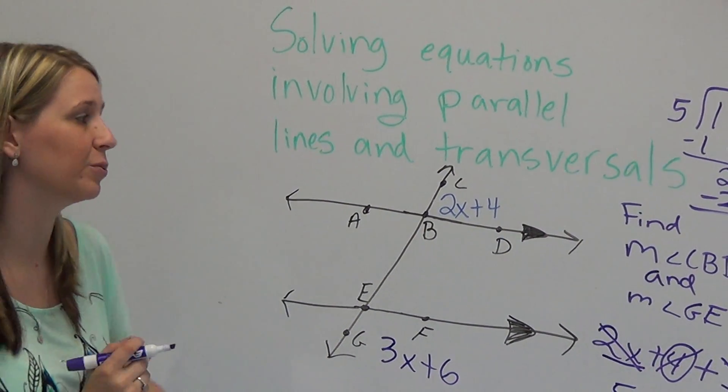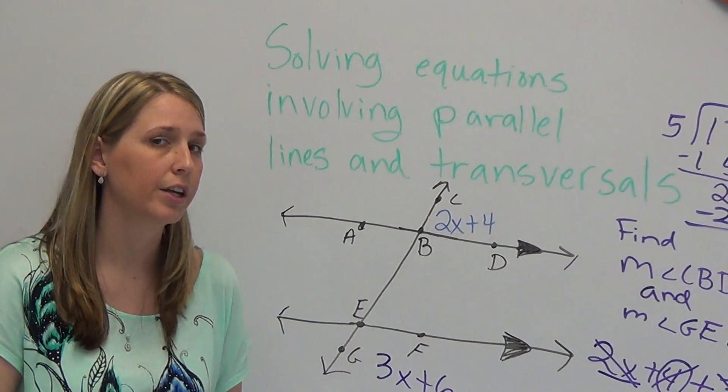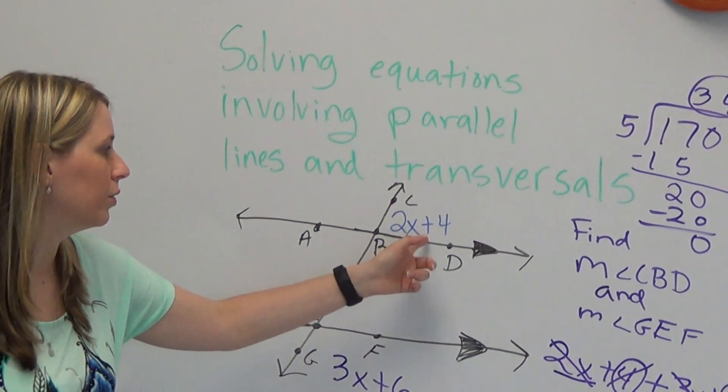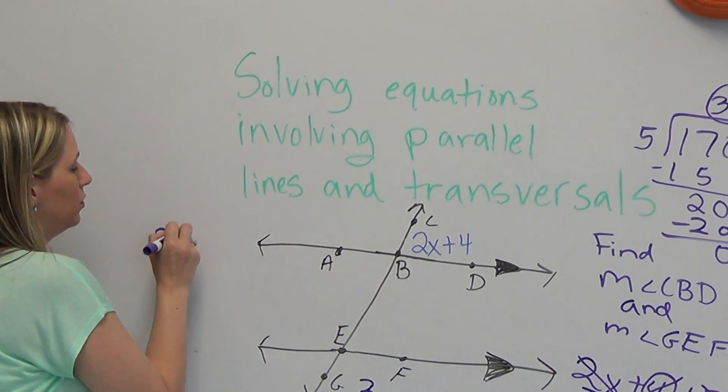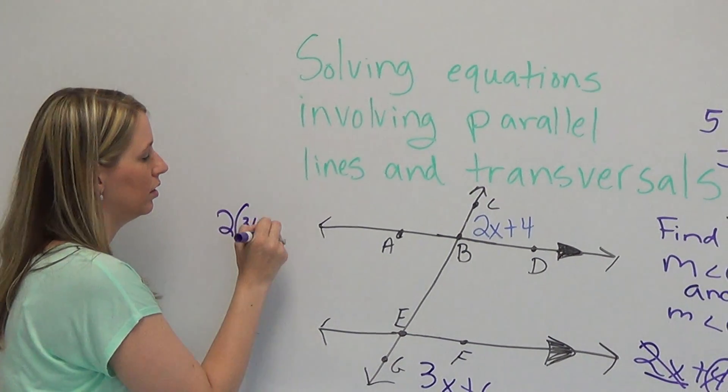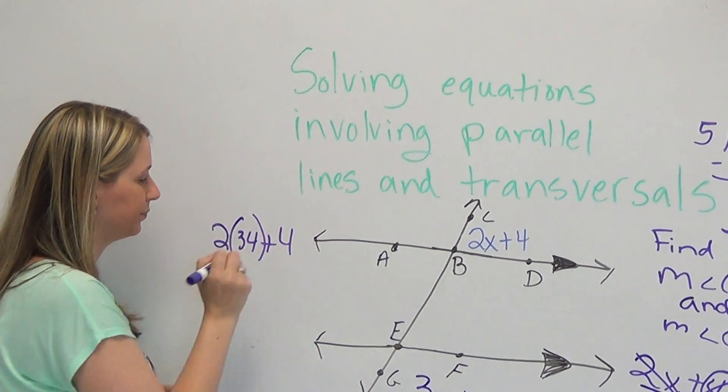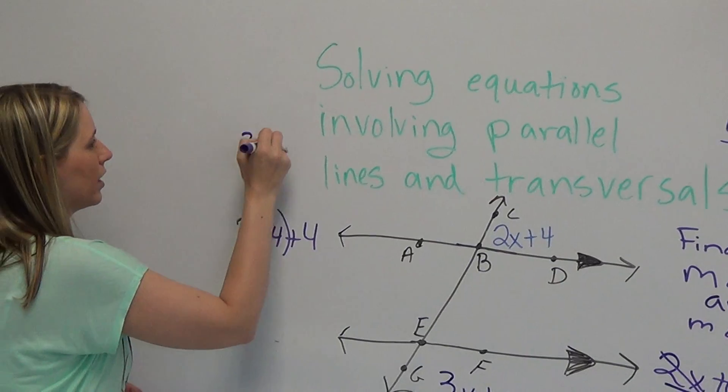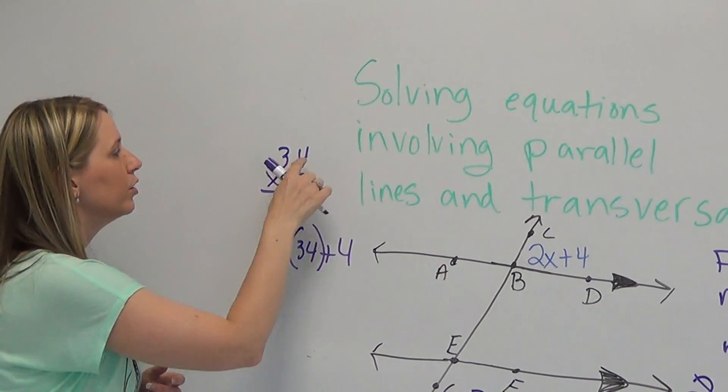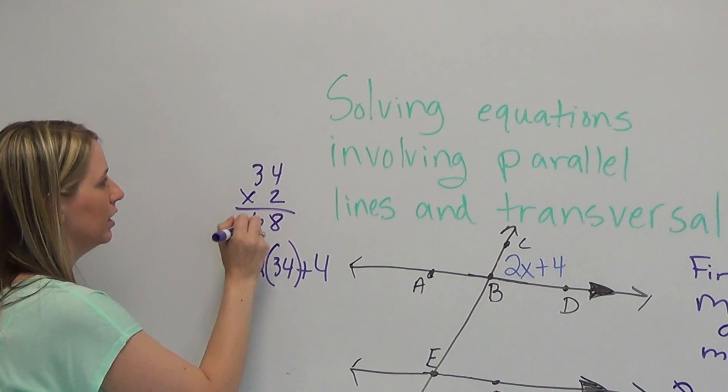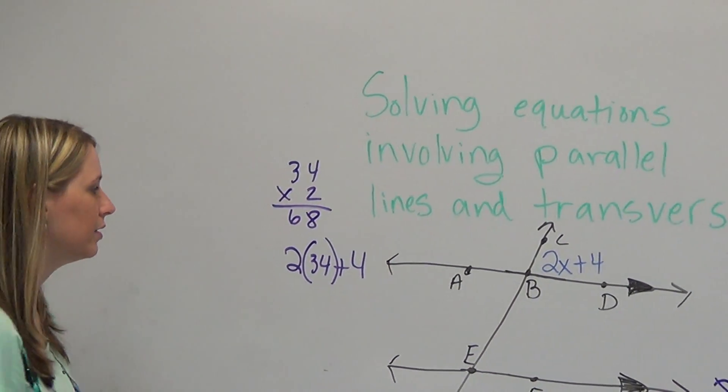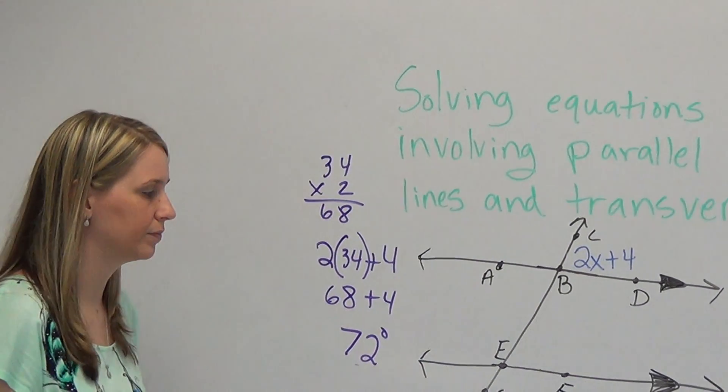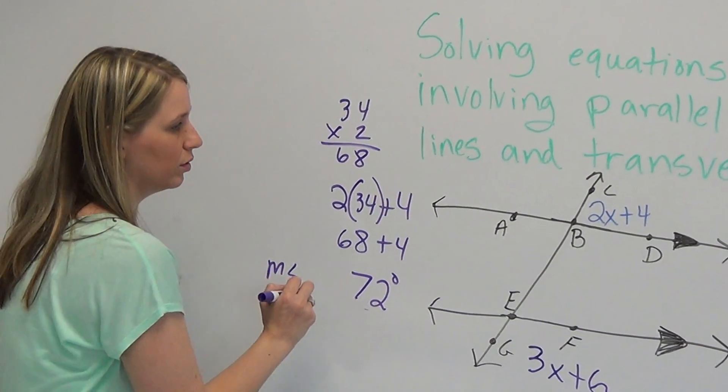Now, again, we're not done with the problem because we haven't answered the question yet. It says find the measure of angle CBD and the measure of angle GEF. So we have to plug them back in. We take our CBD. That would be 2 times, my x is 34 plus 4. And I'll come back to the other one in a minute. So 34 times 2, you can just multiply. 4 times 2 is 8, 2 times 3 is 6. So we get 68. So that's 68 plus 4, which is going to give you 72 degrees. So that's the measure of angle CBD.